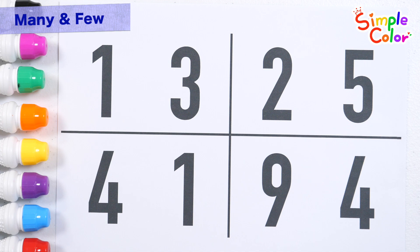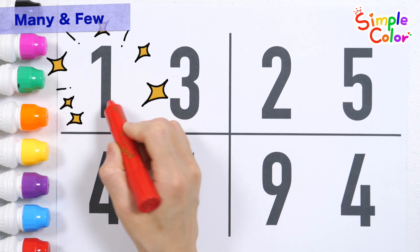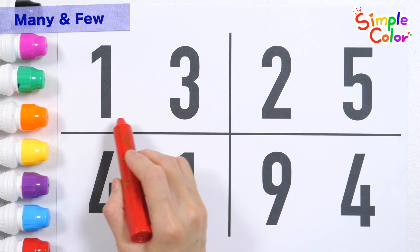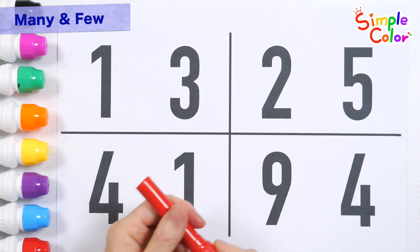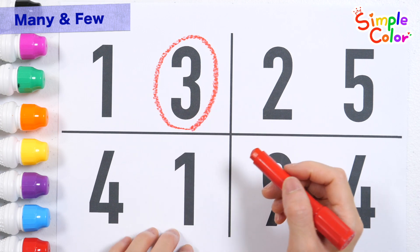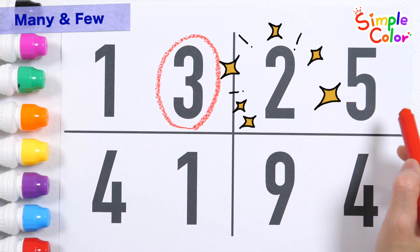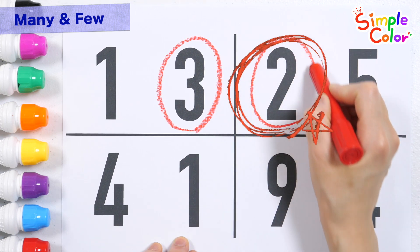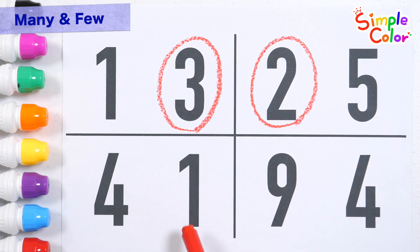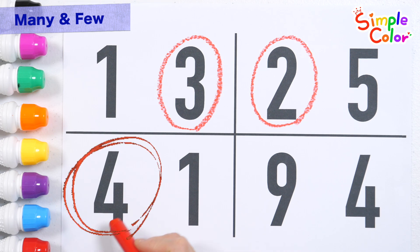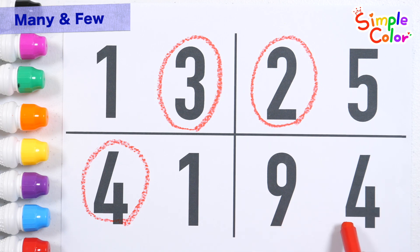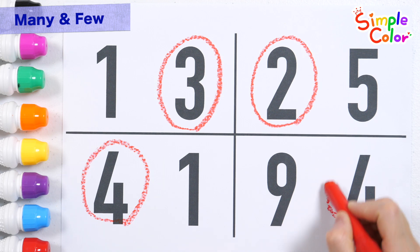Let's look at the numbers and find the larger number. One. Three. Which number is more? Three. That's right. Two. Five. Which number is less? That's right. Four. One. Which number is more? That's right! Nine. Four. Which number is less? Good job!